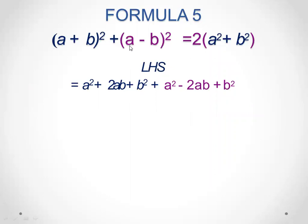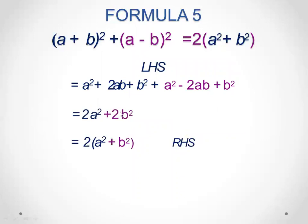The derivation of a minus b whole square has also been done earlier. Looking at like and unlike terms: a square and a square become 2a square, b square and b square become 2b square, and 2ab minus 2ab cancels out. Taking 2 as common, we are left with 2 times open bracket a square plus b square, which is our right hand side. The formula has been proved.